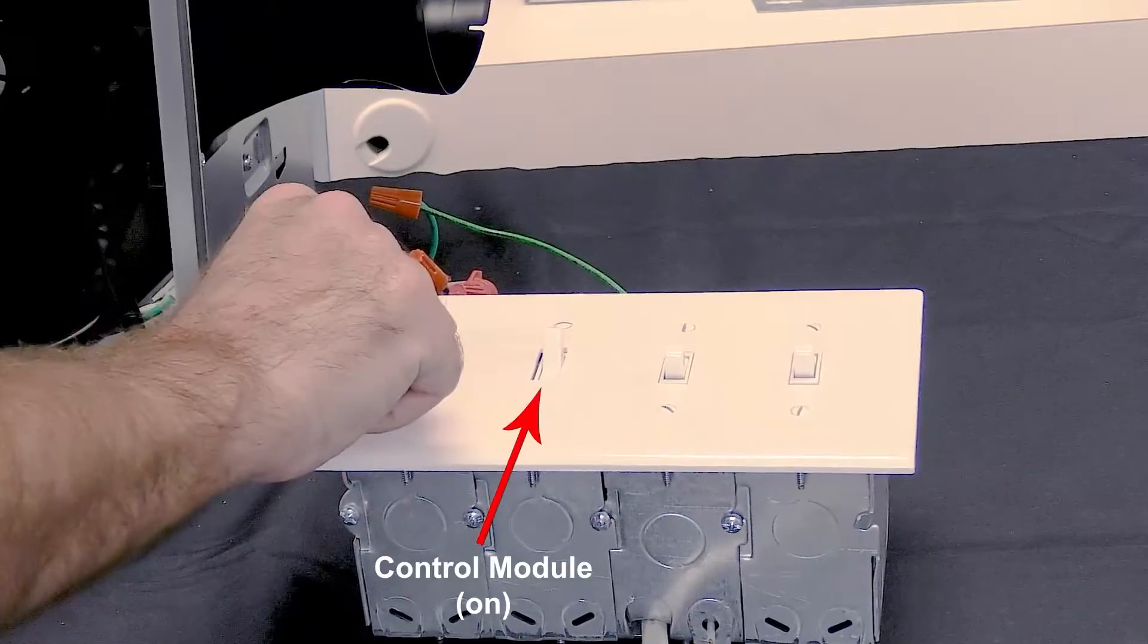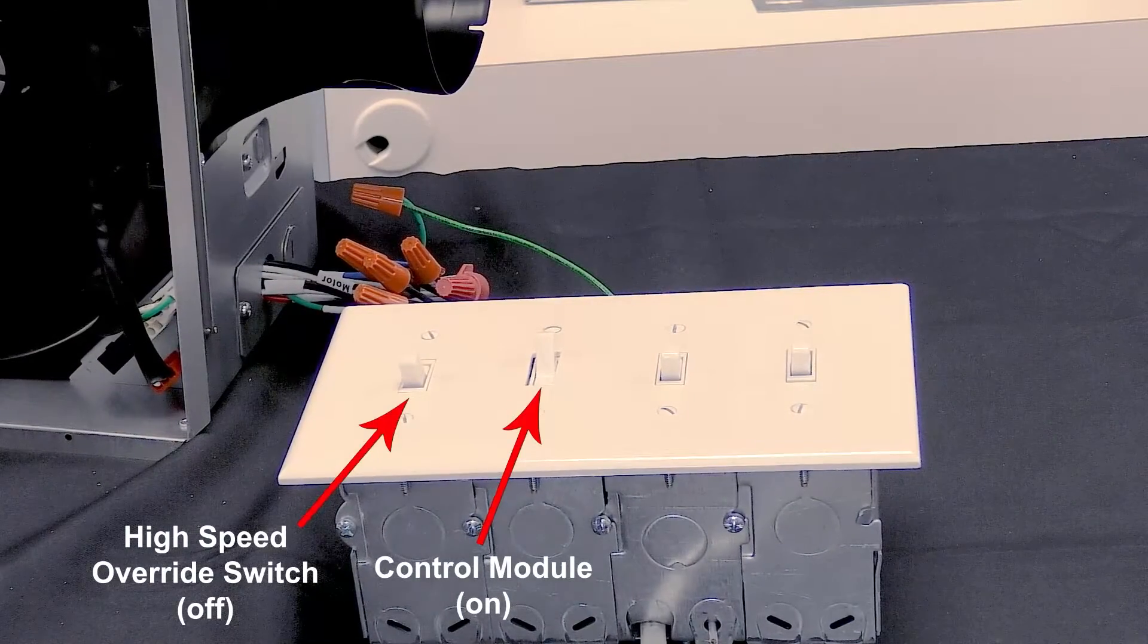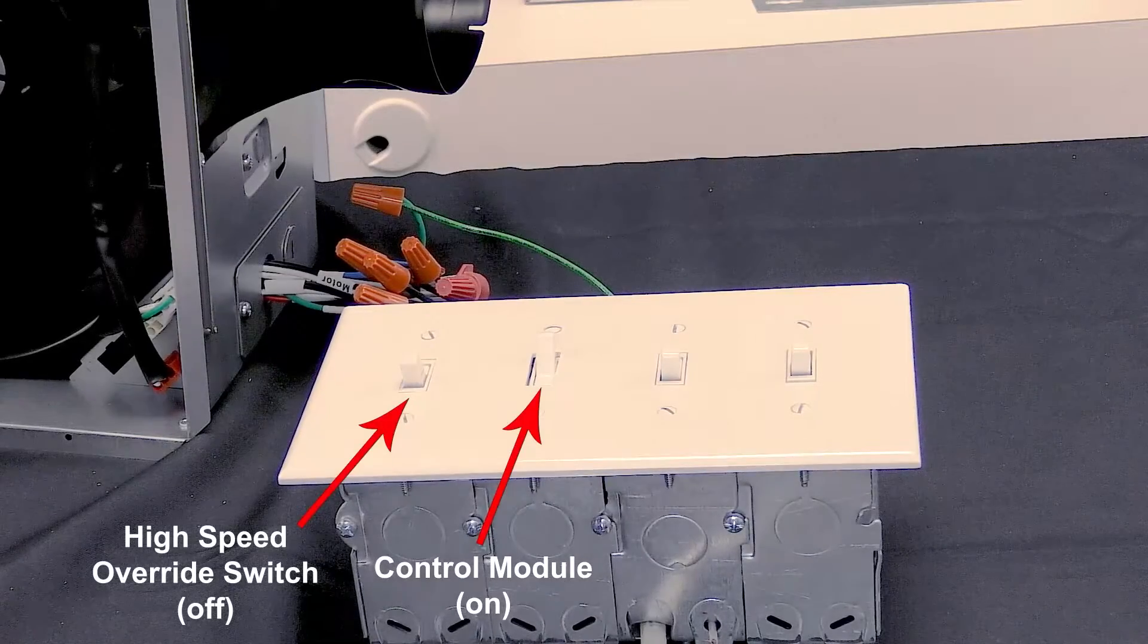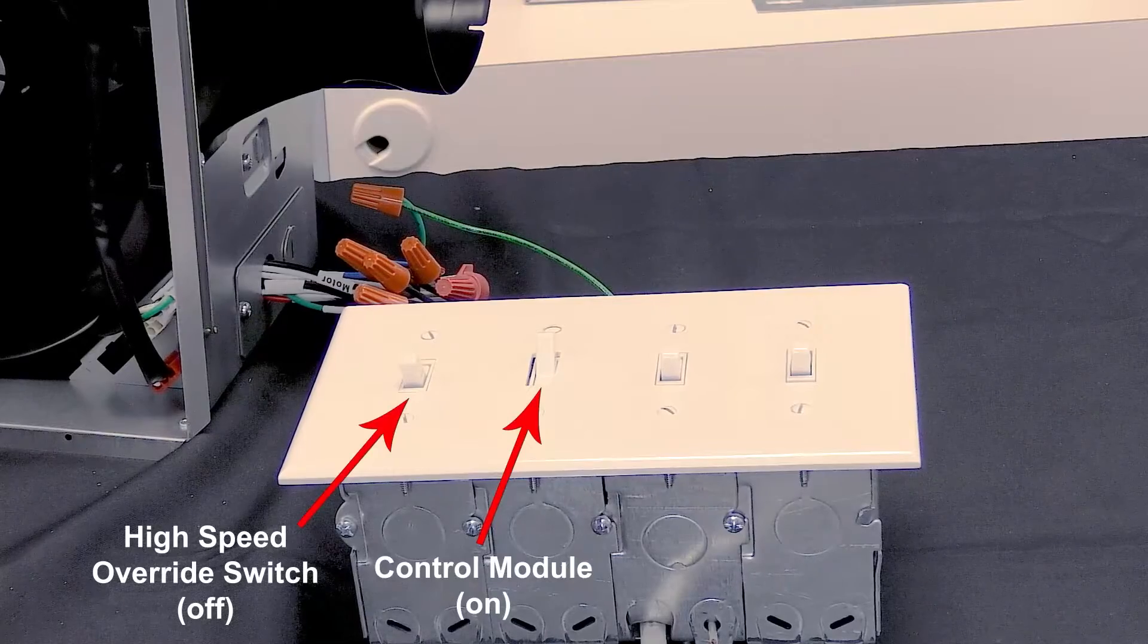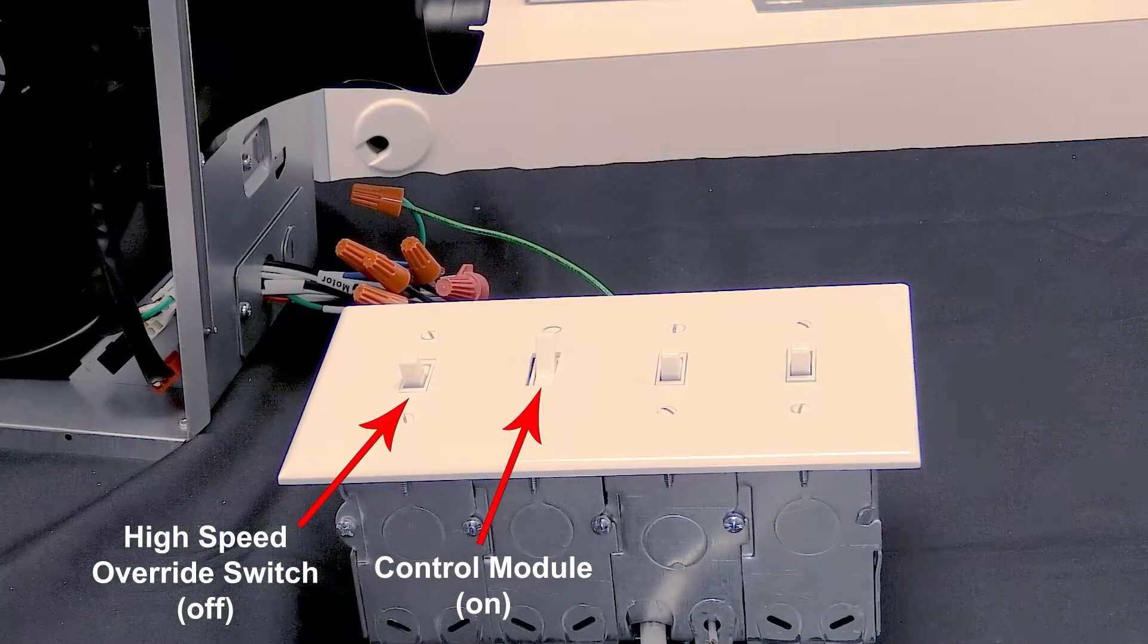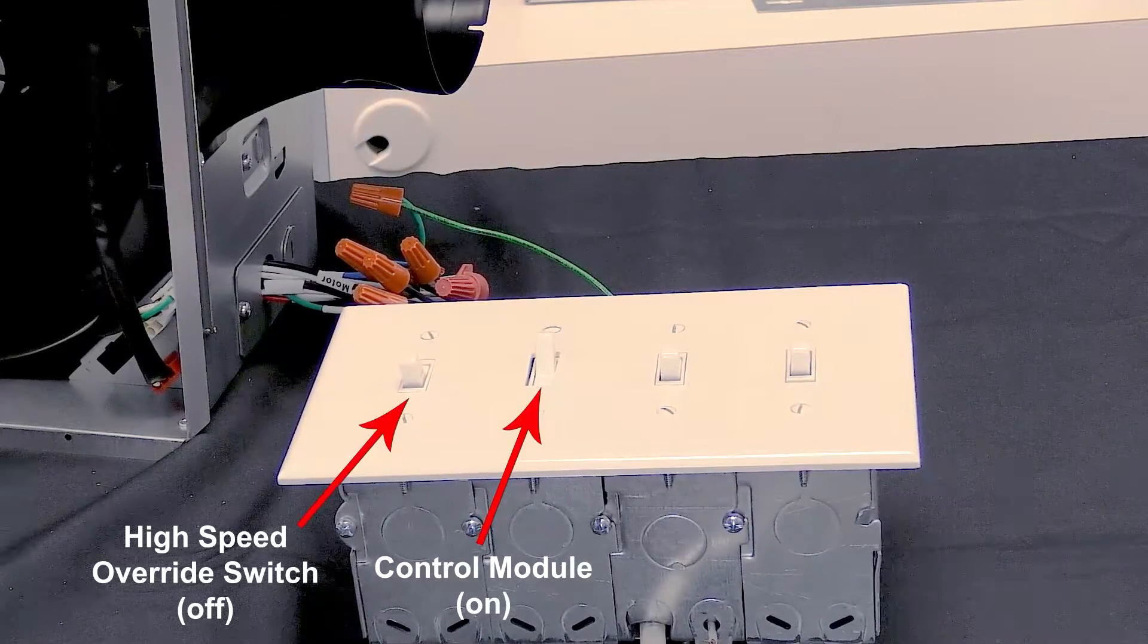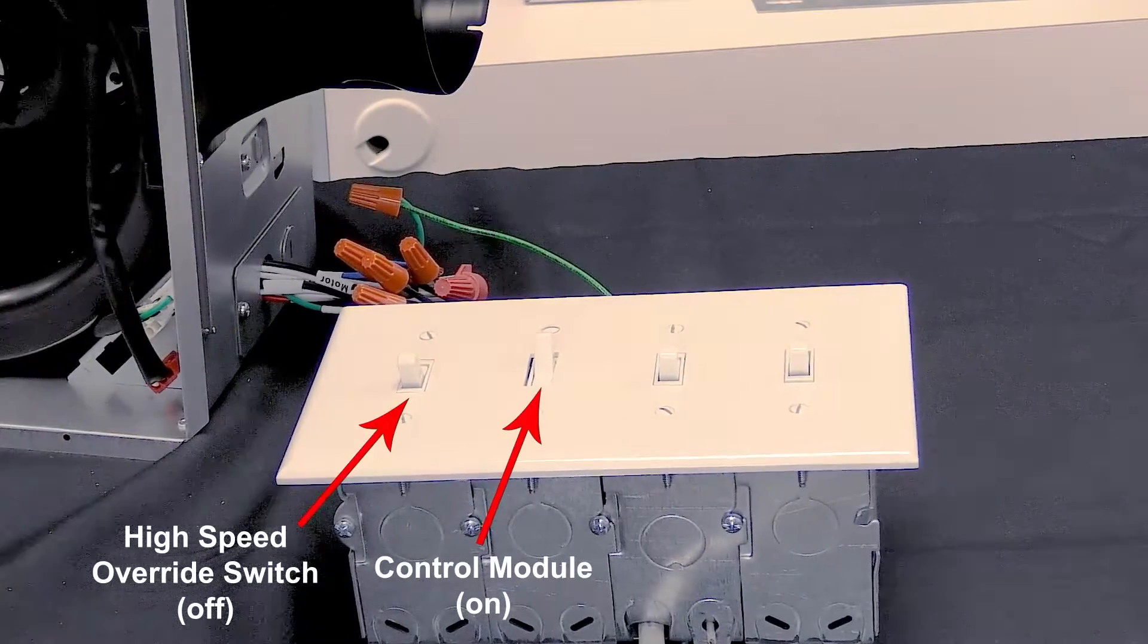When this switch is on and the high-speed override switch is off, as you see on your screen, then the PC-MHK motion and humidity control module will continually sense for motion and humidity, while simultaneously running the fan on an adjustable continuous low speed in the absence of both motion and humidity. If the continuous low speed feature is not wanted, then it can be deactivated at the control.